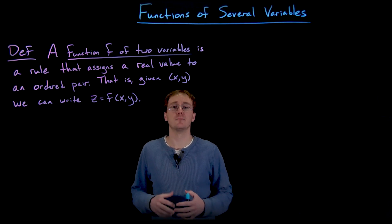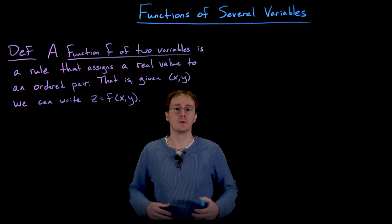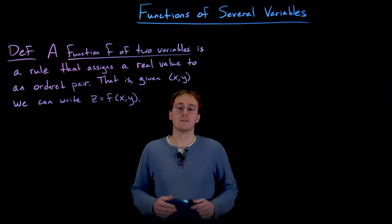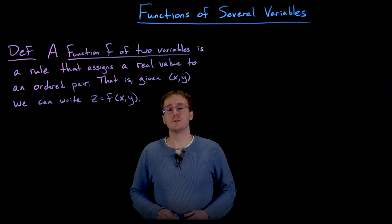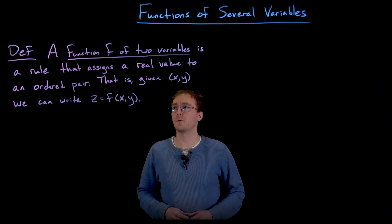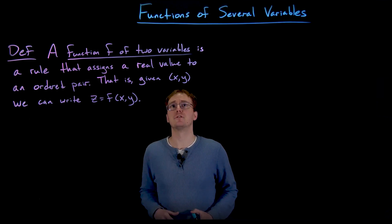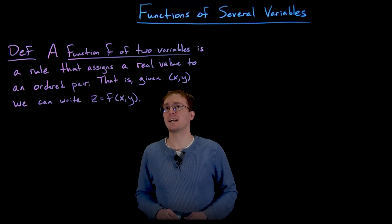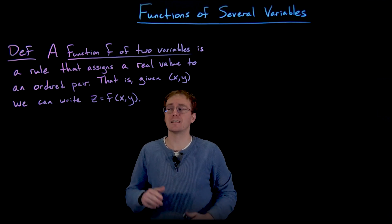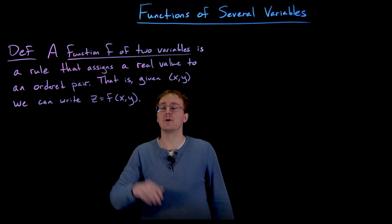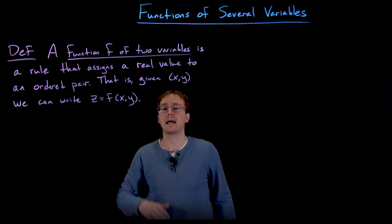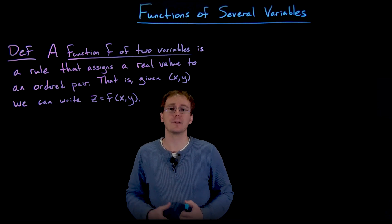We will talk about functions that include more than two variables, but our primary focus is going to be on functions of two variables. A function f of two variables is a rule that assigns a real value to an ordered pair like x and y instead of just x. We can write the output as a function of x and y, and often we think of the output as a third variable value like z.